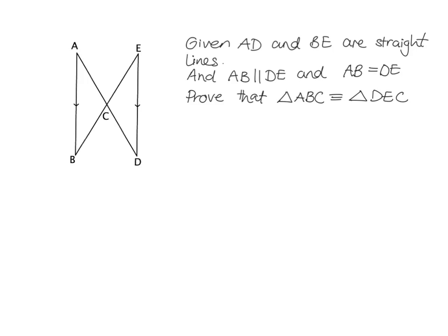Let's start with this example and read it through. We are given that AD and BE are straight lines — that's pretty obvious from the diagram. Then we're told that AB is parallel to DE, which is marked on the diagram. I like to quickly draw in a little red for parallel lines so I remember to look at them when I'm doing my proof.